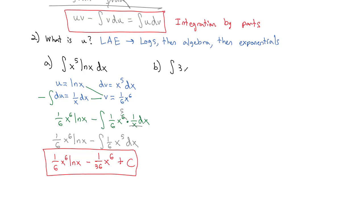Next example: the integral of three x times e to the four x dx. Substitution won't work — there's an extra x. Using integration by parts with LAE, there are no logs, but there is algebra: the polynomial three x. So u equals three x and dv equals e to the four x dx.